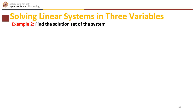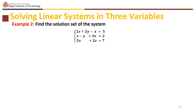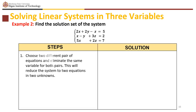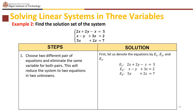The second example is to find the solution set of the system: 2x plus 2y minus z equals 5, x minus y plus 3z equals 2, and 5x plus 2z equals 7. Denote these as e sub 1, e sub 2, and e sub 3 respectively.